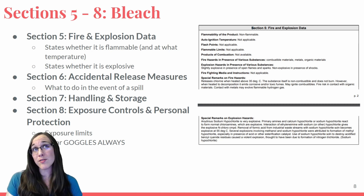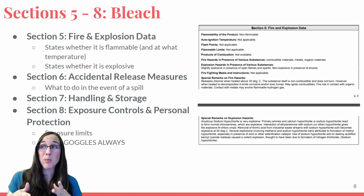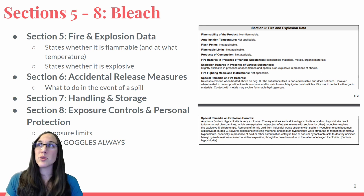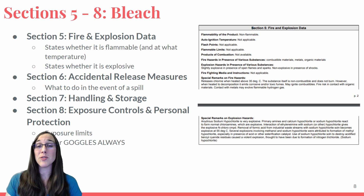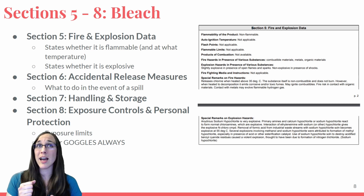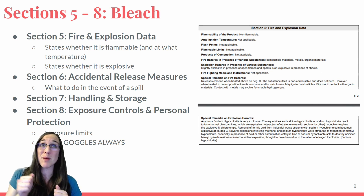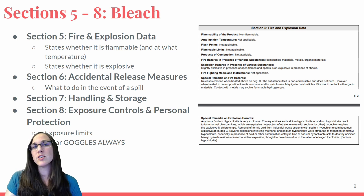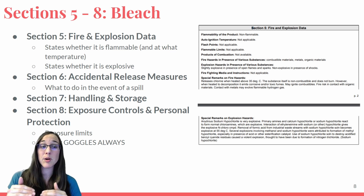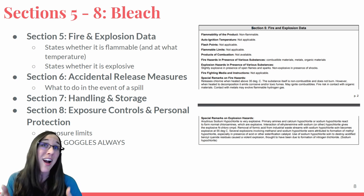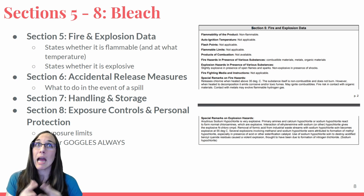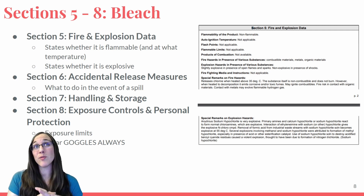Section six is accidental release measures — if you were to spill it somewhere, what do you do and how do you clean it up? Section seven is handling and storage — how are you going to store it in a chemical laboratory? What do you put it near? Can you safely keep it near some chemicals and away from others? Do you need special gloves or a bodysuit? Section eight is exposure controls and personal protection — what's the limit of how much you should be exposed to this chemical? It states you should always be wearing goggles when handling any kind of chemical.